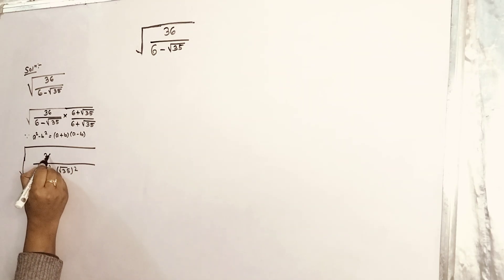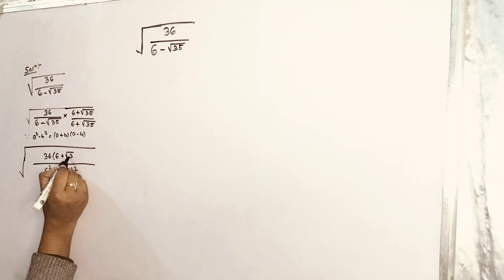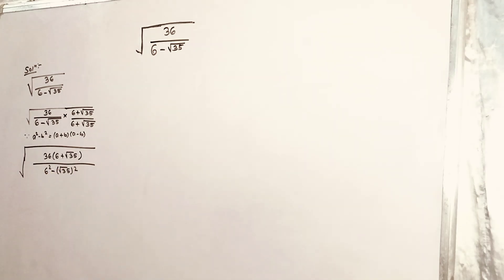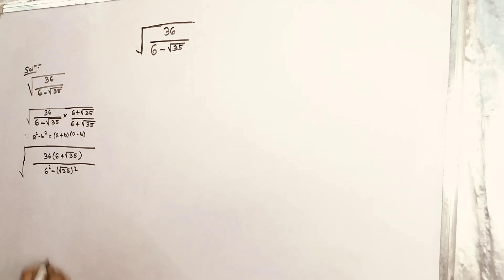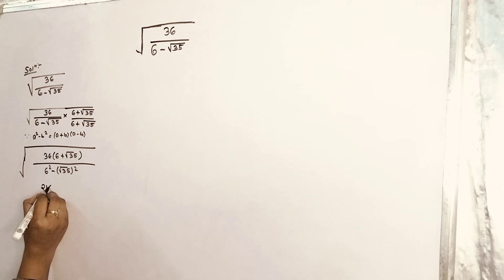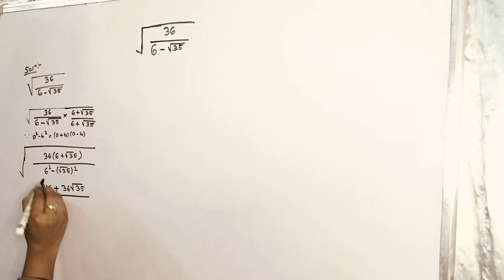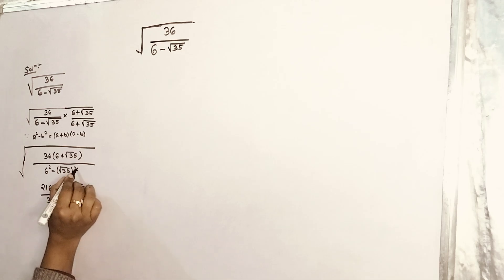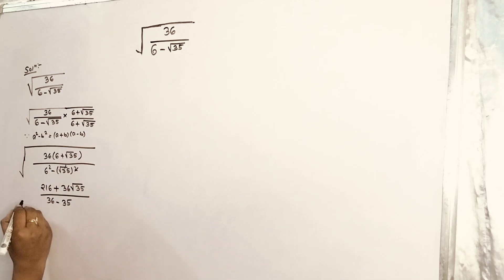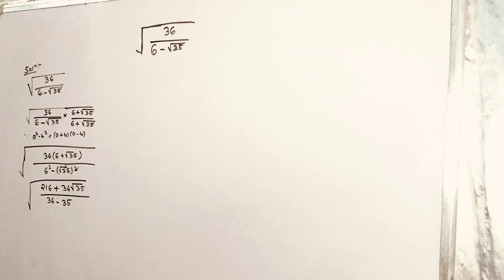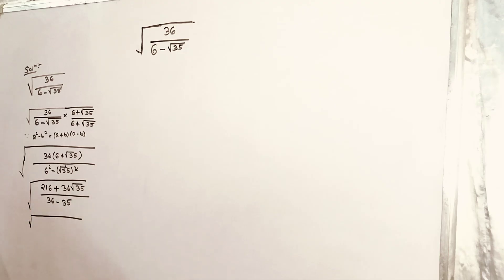In the numerator we will have (6 plus root under 35). Now our next step: this gives us 36 into 6, which is 216, plus 36 root under 35, divided by 6 squared (which is 36) minus 35 — and the square root gets cancelled out leaving 35. So the denominator is 36 minus 35, which equals 1, so we won't write the denominator.